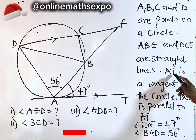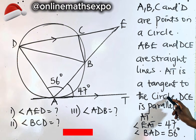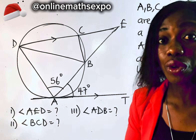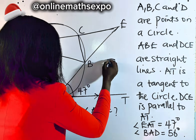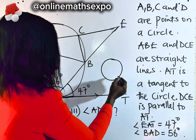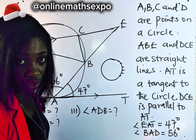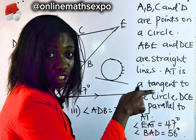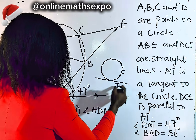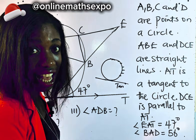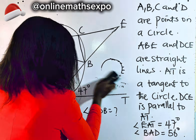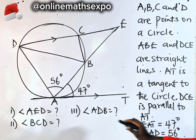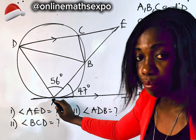We are also told that AT is a tangent to the circle. Now look at A and T — this line is not just a straight line but a tangent. What do we mean by tangent? A tangent is a straight line that touches the circumference of the circle at a point without cutting through. So this line is what we call a tangent, and it reminds you of a theorem.